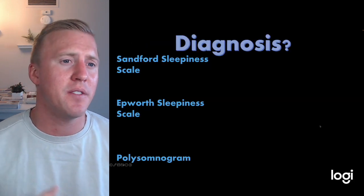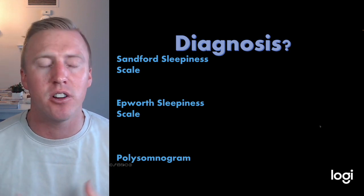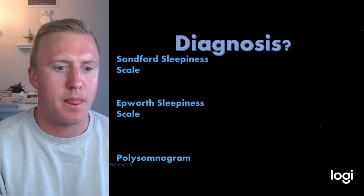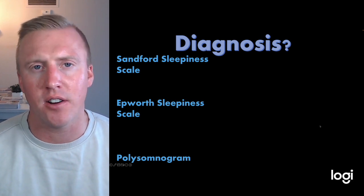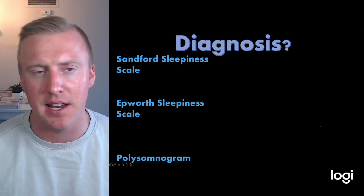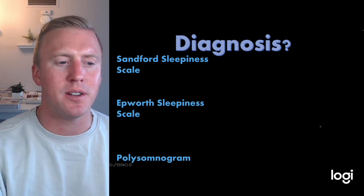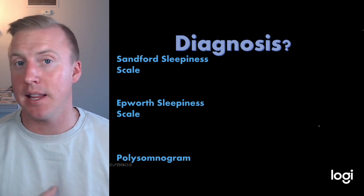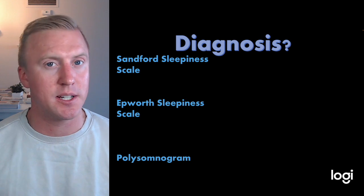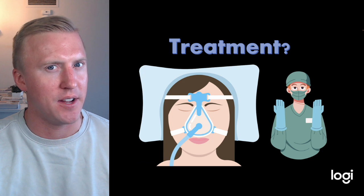For diagnosis, we have the Stanford sleepiness scale and the Epworth sleepiness scale. Both look at how sleepy patients are during the day or how likely they are to fall asleep during non-stimulating times. They take a score and see how likely it is. But the biggest thing is bringing them into a lab for a polysomnogram—bringing them in, watching them sleep. It's very expensive and cannot be done at home. There are some things that can be done at home, but they're not usually super specific.